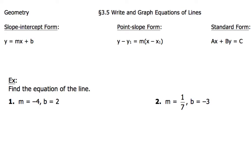The very first thing we're going to take a look at are the three different forms that you might see lines written in. The first is slope-intercept form, and that's going to take the form y equals mx plus b. Now m represents the slope, and b represents the y-intercept.